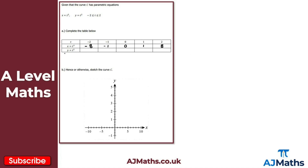Now for y equals t squared: when t is minus 2, minus 2 squared gives 4. When t is minus 1, minus 1 squared gives 1. For t equals 0, we get 0. When t is 1, 1 squared gives 1. And finally when t is 2, 2 squared gives 4. That completes the table — that's the solution to part (a).